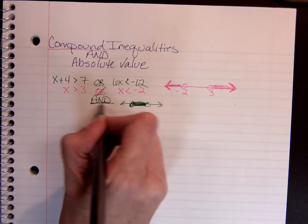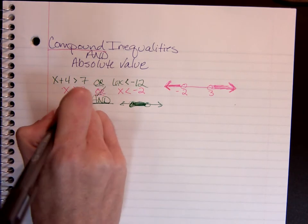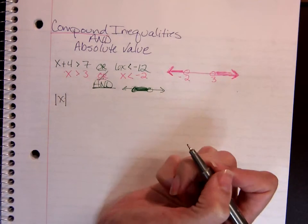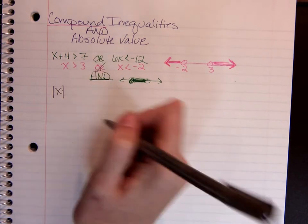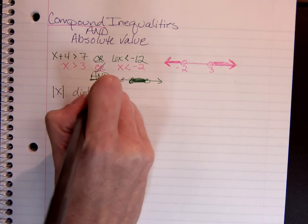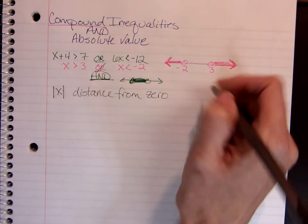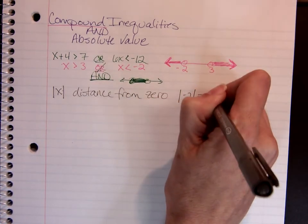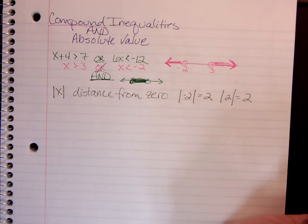But when we're given a problem that has an and in the middle of it, then that means whatever my results are, they had better meet both criteria. Well, kind of the same thing going on when we're talking about absolute value. So you've seen it in your parent function notes. We've done a little bit of graphing. You did lots the other day with transformations. Remember that absolute value is the distance on a number line from 0. So the absolute value of negative 2 is 2 units away from 0. And the absolute value of positive 2 is 2 units away from 0.